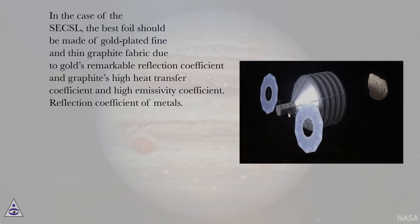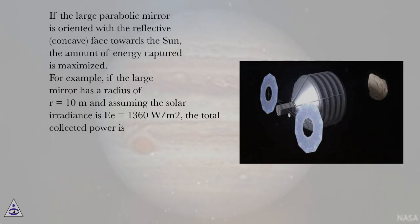In the case of the SECSL, the best foil should be made of gold-plated fine and thin graphite fabric due to gold's remarkable reflection coefficient and graphite's high heat transfer coefficient and high emissivity coefficient. If the large parabolic mirror is oriented with a reflective concave face towards the sun, the amount of energy captured is maximized.